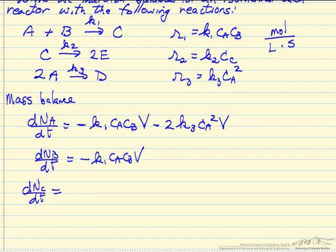For C, the total number of moles of C - well now we have 2 reactions. C is formed in the first reaction so this is a plus sign: K1 Ca Cb times volume. And then C reacts in the second reaction: K2 concentration of C times volume.